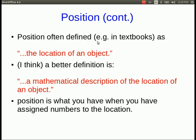In textbooks a position is often defined as the location of an object. But I don't think that's a very good definition. You can ask me where's the ruler? And I can point at my desk and say right there. And I've told you the location but I haven't told you the position. If I tell you instead 20 centimeters left of my coffee mug, then that's a position. A position is what you get once you've assigned numbers to a location.